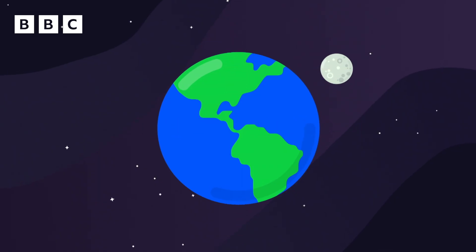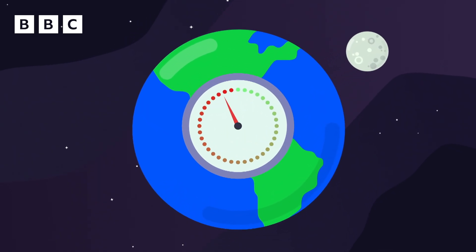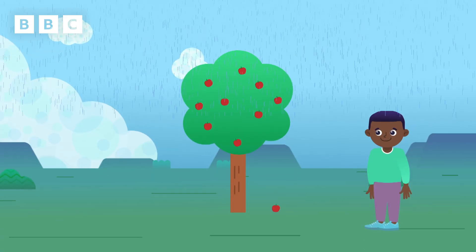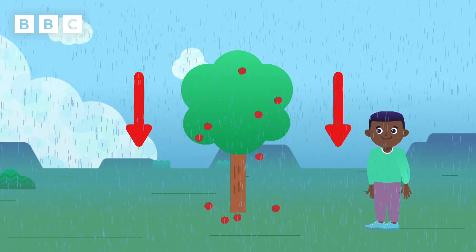Because the Earth has such a big mass, its force of gravity is really, really strong. So it is Earth's gravity that pulls everything on it down to the ground.